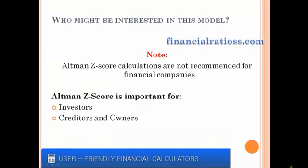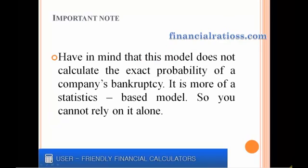The Altman Z-Score calculations are not recommended for financial companies. This bankruptcy calculation model is important for the company's investors and creditors as well as owners, as it provides information on how close the company is to a possible bankruptcy. Have in mind that this model does not calculate the exact probability of a company's bankruptcy — it is more of a statistics-based model, so you cannot rely on it alone. Thank you for watching and see you in other videos.